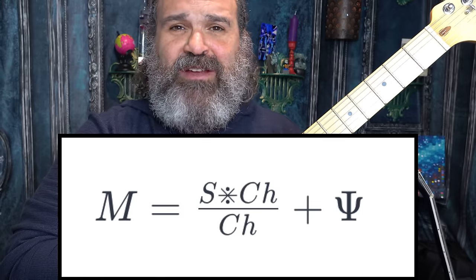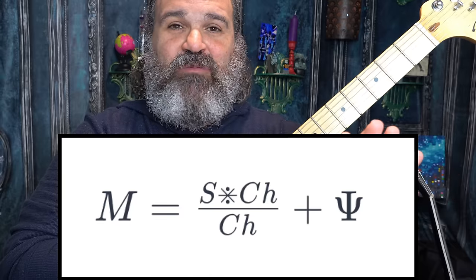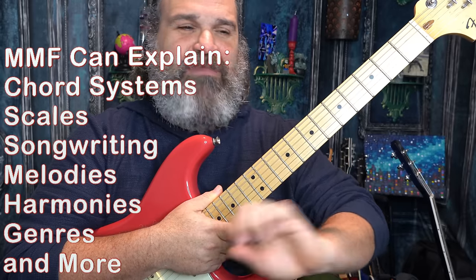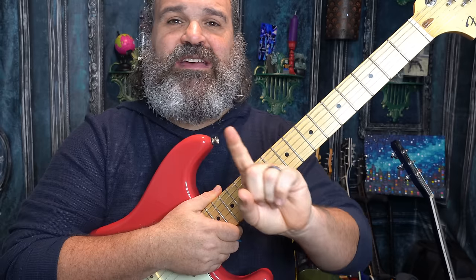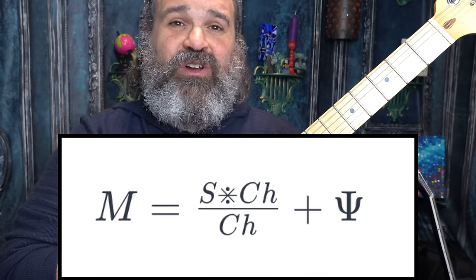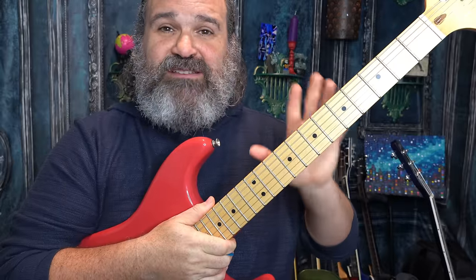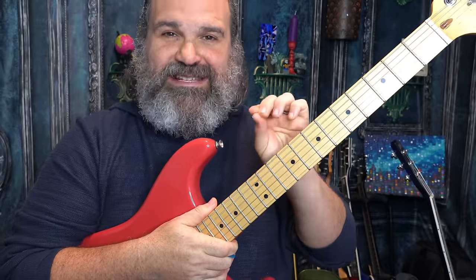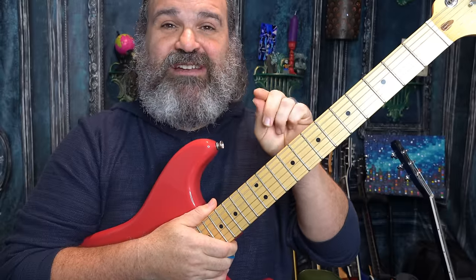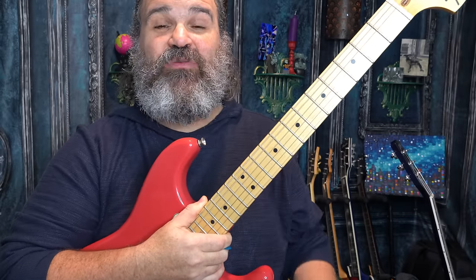That's how you need to look at music. In future videos we're going to look at chord systems, scales, songwriting, melodies, harmonies, genres — everything is going to be explained through this formula. Again: music equals scales and chord tones over chords plus the human element. I'll give you a brief example of some things that pertain so you can see it work. This formula will be appearing on my channel nonstop to help you understand what you've already learned, things to learn in the future, and how to really command this instrument the way you want to.